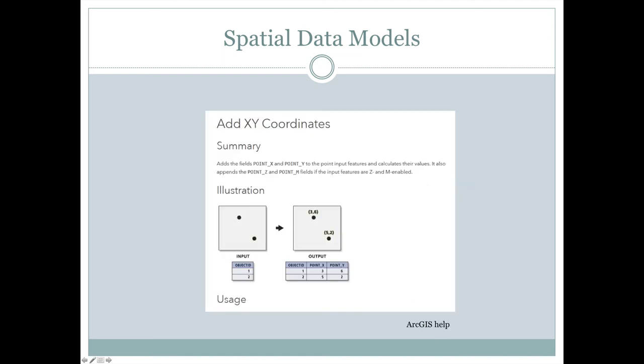If we have an attribute table such as this attribute table for these two points here, they might just have an object ID associated with them if they don't have anything else in their attribute table. But we can use this command, add X and Y coordinates, and we can add two new columns to the attribute table, and then it will actually give us the value of the X and Y coordinates. So they're stored outside of the attribute table, but we can recall them or retrieve them into the attribute table if we'd like to.